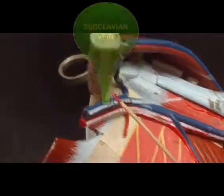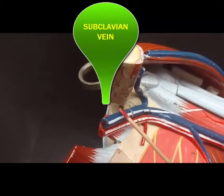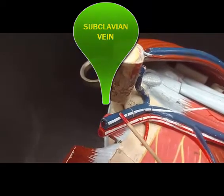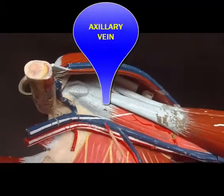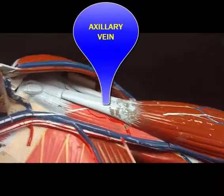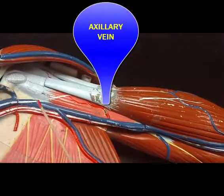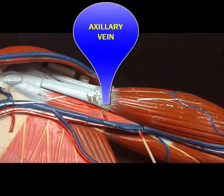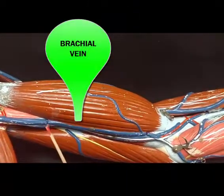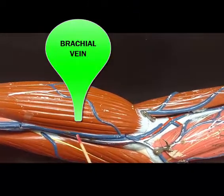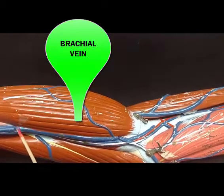If we follow another way down from the subclavian vein, from here to about here, that region is going to be the axillary vein, because this is in the axillary region. And then after that, this is going to be the brachial vein, because this is the brachial region.